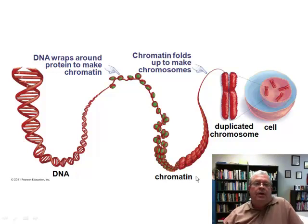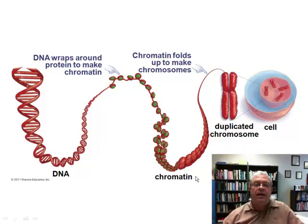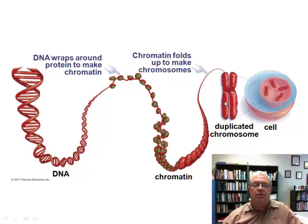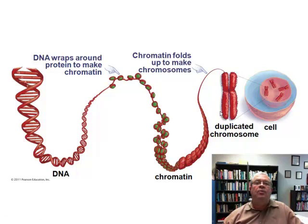We are now continuing our study of DNA and learning about something called a chromosome. Here we have the old double helix, and over here we have something called a chromosome. A chromosome is a structure that contains part of a cell's DNA.